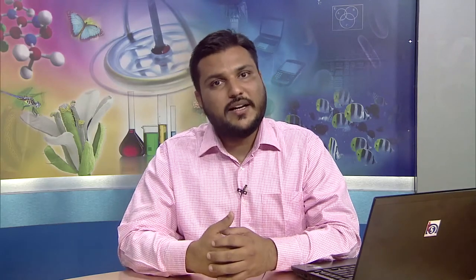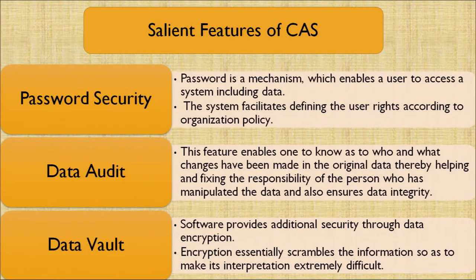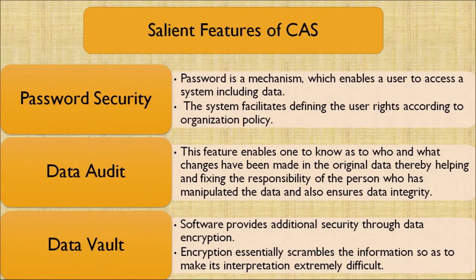Second, data audit: this feature enables one to know who made changes and what changes have been made in the original data, thereby helping in fixing the responsibility of a person who has manipulated the data and ensuring data integrity. A data log is also maintained — if changes happen in the data log, we can know who committed the violation. Last is data vault: software provides additional security through data encryption, which essentially scrambles the information to make interpretation extremely difficult.